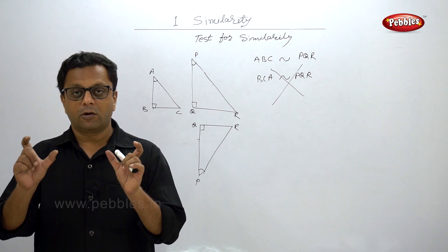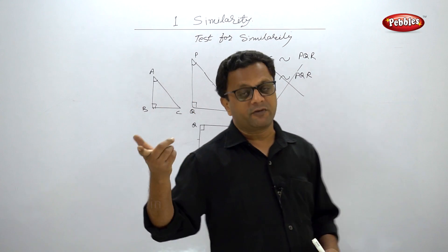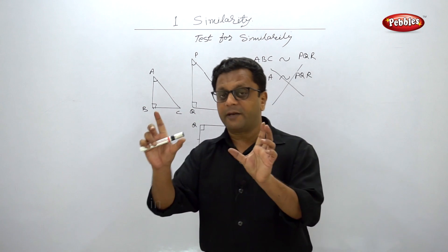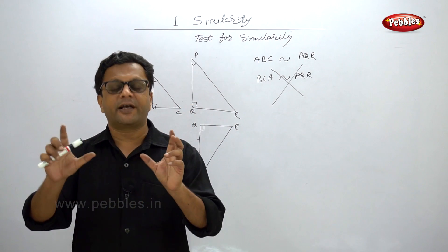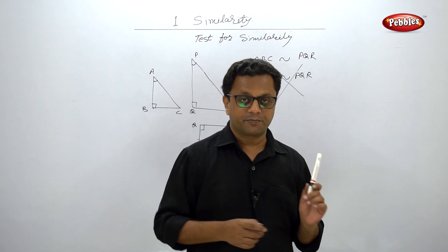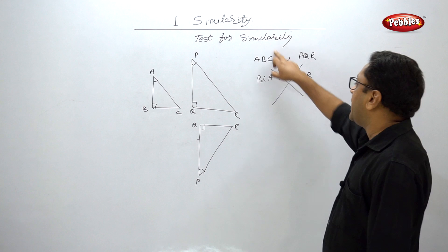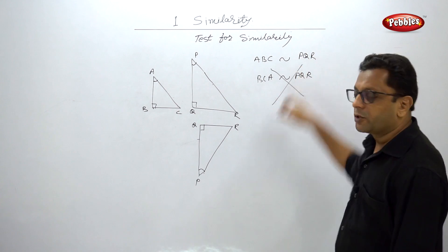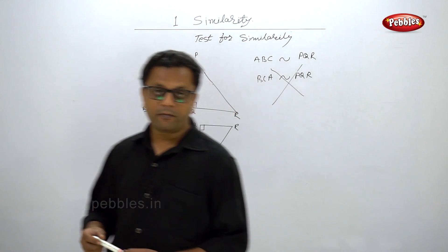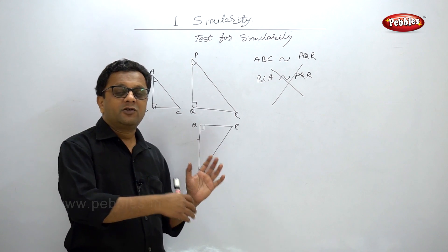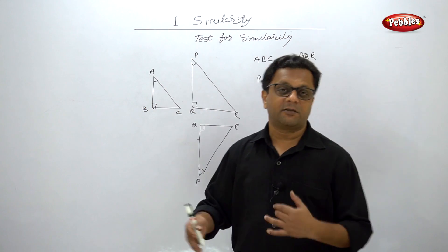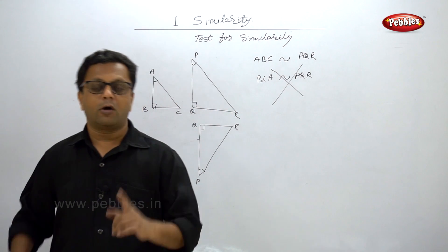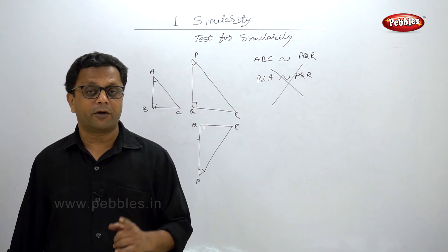When only one triangle is given, you can change the order of vertices and the triangle remains the same. But when writing two similar triangle names, if you interchange vertices there is a problem. Whatever operation you do with the first triangle's name, do the same operation with the second triangle's name. The key point is not just proving two triangles are similar — it is whether you are writing the names of the similar triangles perfectly. That is the key skill of this chapter.